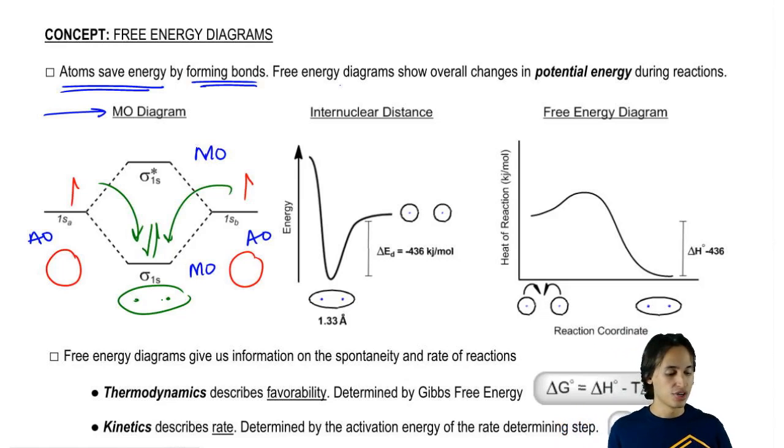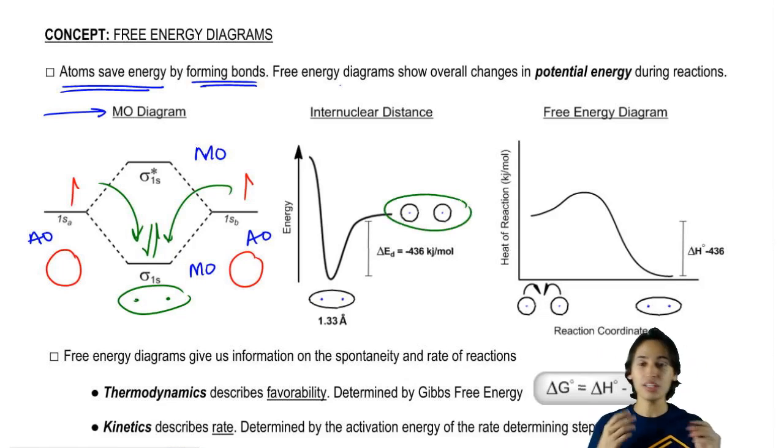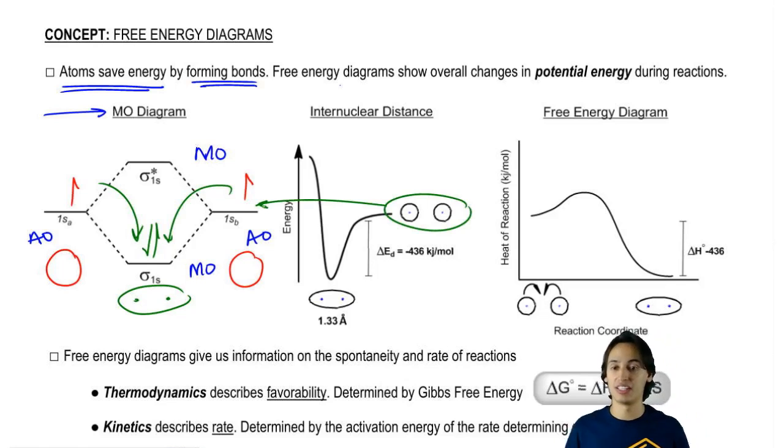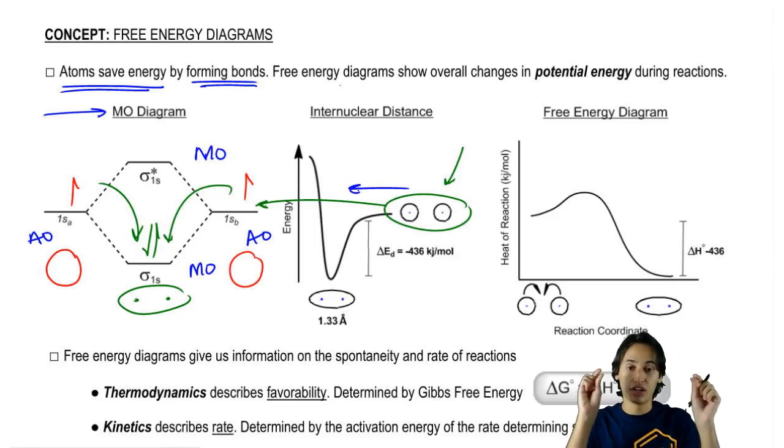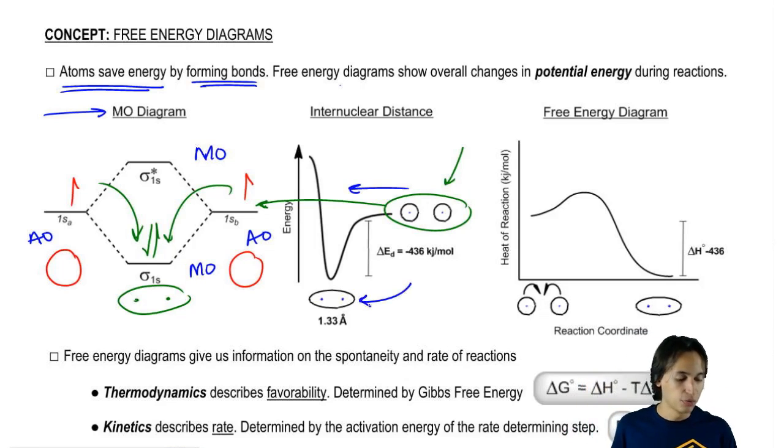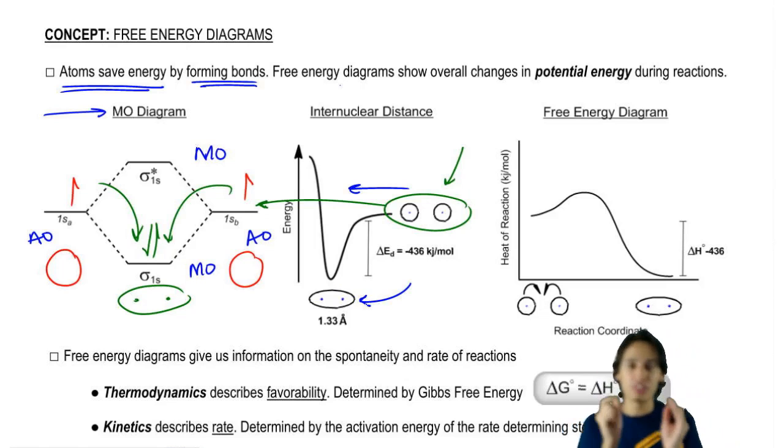We could also use a graph of the distances to figure out how much energy we were saving as the nuclei got closer together. This was the energy state that we had if it was not bonded to anything. But then as we get the nuclei closer together, they would form this perfect sweet spot where they'd be the perfect distance apart. In this case it was 1.33 angstroms and that would be the amount of distance required to save the maximum amount of energy. The number of the energy is important. This just happened to be negative 436 kilojoules per mole.